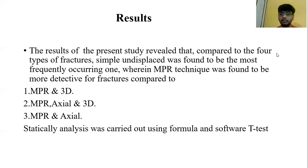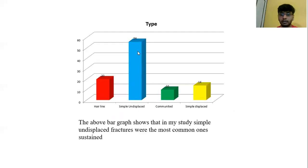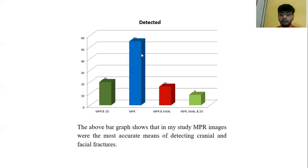Coming to the results: the present CT study revealed that compared to other fracture types, the simple and displaced fracture was found to be the most frequently occurring one. Multiplanar reconstruction was found to be the most accurate technique for detecting fractures compared to axial CT alone and 3D multiplanar reconstruction. Statistical analysis was carried out using standard software. The bar graph shows that in this study, simple and displaced fractures were the most common, and multiplanar reconstruction imaging was the most accurate means of detecting cranial and facial fractures compared to other modes.